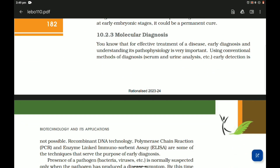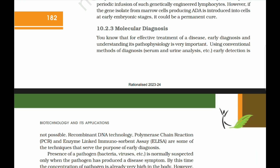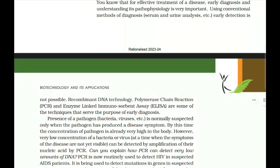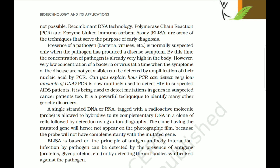For effective treatment of a disease, early diagnosis and understanding its pathophysiology is very important. Using conventional methods such as serum and urine analysis, early detection is not possible. Recombinant DNA technology, polymerase chain reaction (PCR), and enzyme-linked immunosorbent assay (ELISA) are techniques that serve the purpose of early diagnosis. Very low concentrations of a bacterium or virus, at a time when symptoms are not yet visible, can be detected by amplification of nucleic acid by PCR. PCR is now routinely used to detect HIV in suspected AIDS patients and mutations in genes in suspected cancer patients.